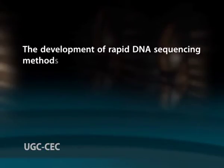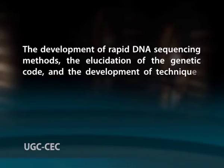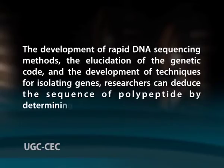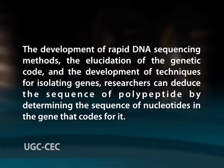The development of rapid DNA sequencing methods, the elucidation of the genetic code, and the development of techniques for isolating genes allow researchers to deduce the sequence of a polypeptide by determining the sequence of nucleotides in the gene that codes for it. The techniques used to determine protein and DNA sequences are complementary. When the gene is available, sequencing the DNA can be faster and more accurate than sequencing the protein. Most proteins are now sequenced in this indirect way. If the gene has not been isolated, direct sequencing of peptides is necessary and can provide information — such as the location of disulfide bonds — not available in the DNA sequence. Knowledge of the amino acid sequence of even a part of a polypeptide can greatly facilitate the isolation of the corresponding gene.